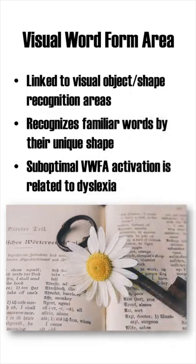The Visual Word Form Area is located in the vicinity of, and related to, other visual areas that process object and shape recognition. Indeed, it has been suggested that letters, letter combinations, and entire words are processed as special shapes by the Visual Word Form Area.